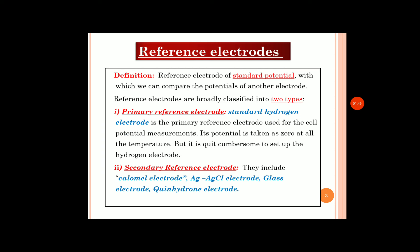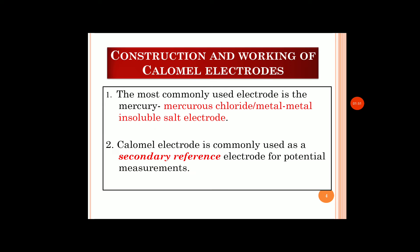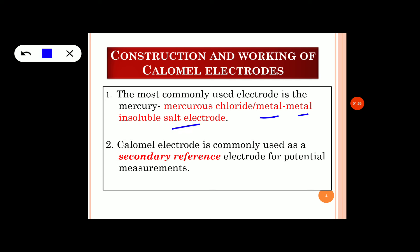Now let us know about the construction of the calomel electrode. The calomel electrode is an example of a metal insoluble salt electrode — that is, mercury and mercurous chloride. The metal is mercury and the metal insoluble salt is mercurous chloride. The calomel electrode is commonly used as a secondary reference electrode and is most commonly used in the laboratory because it is very easy to set up and use.